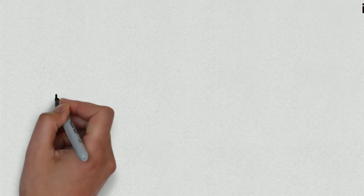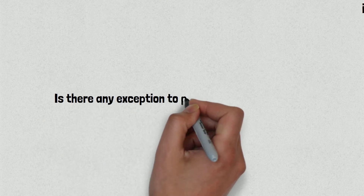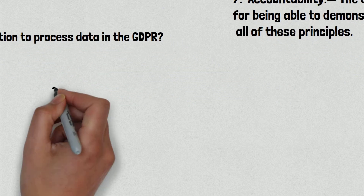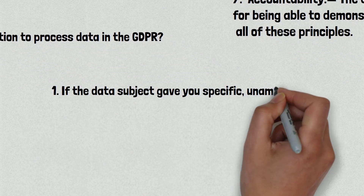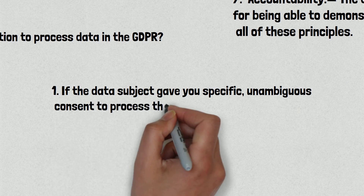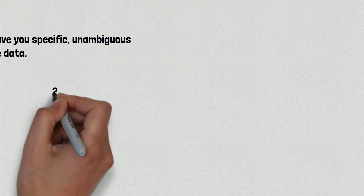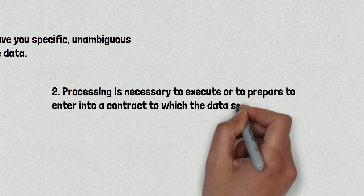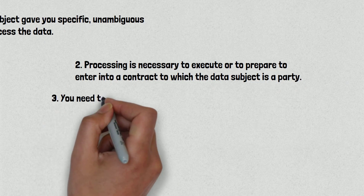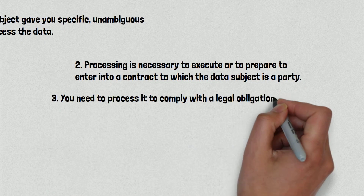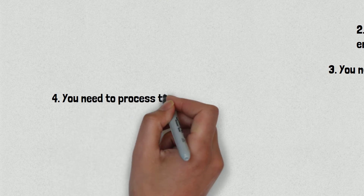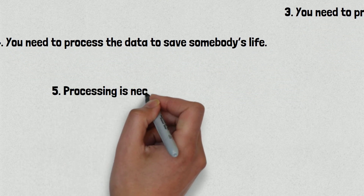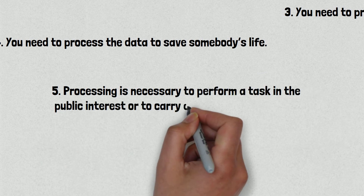Now, the question arises: is there any exception to process data under the GDPR? The answer is yes. Number one: the data subject gave specific, unambiguous consent to process the data. Number two: processing is necessary to execute or prepare to enter into a contract to which the data subject is a party. Number three: you need to process it to comply with a legal obligation. Number four: you need to process the data to save somebody's life. Number five: processing is necessary to perform a task in the public interest or to carry out some official function.